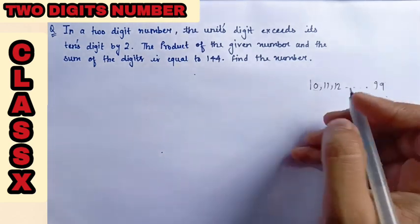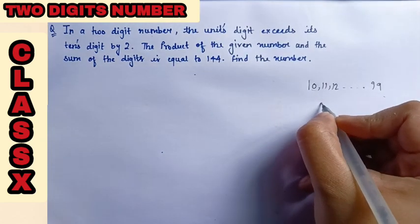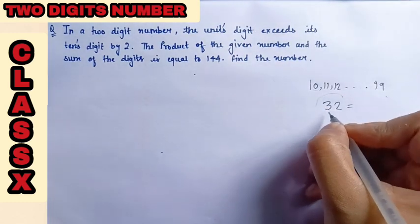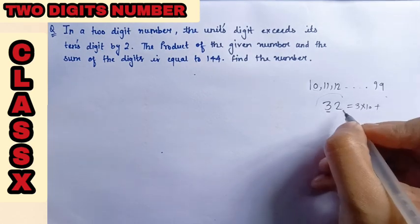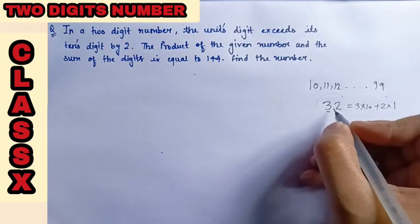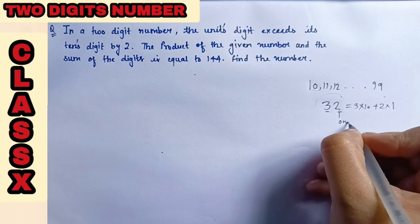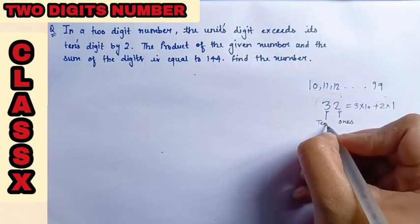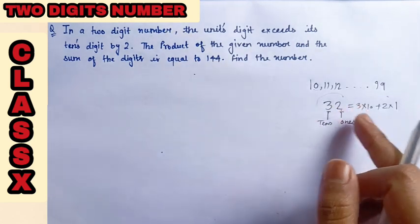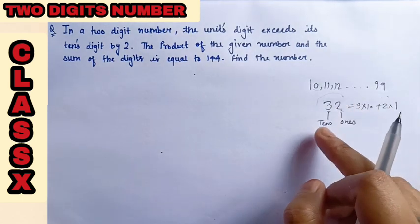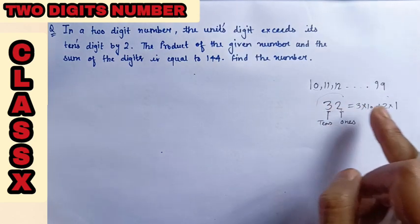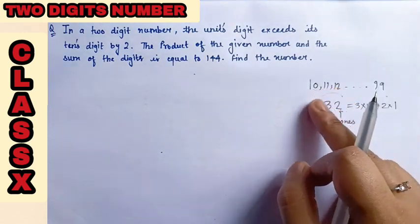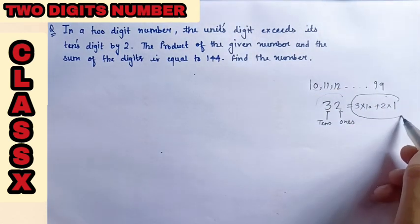What is the criteria to write a two-digit number? Let us take an example. We are picking 32 here. You know how to write it in expanded form: 3 into 10 plus 2 into 1, because its place is 1's or unit place, and its place is 10's. So 10's place keepers will show its value by multiplying by 10, and 1's place by multiplying by 1. So 30 plus 2 gives you 32. This is the way to write a two-digit number.